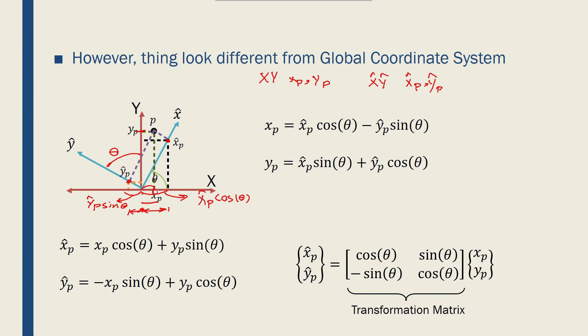And so we know that xp is now equal to x hat p times cos theta minus y hat p times sine theta, which we have shown in here.